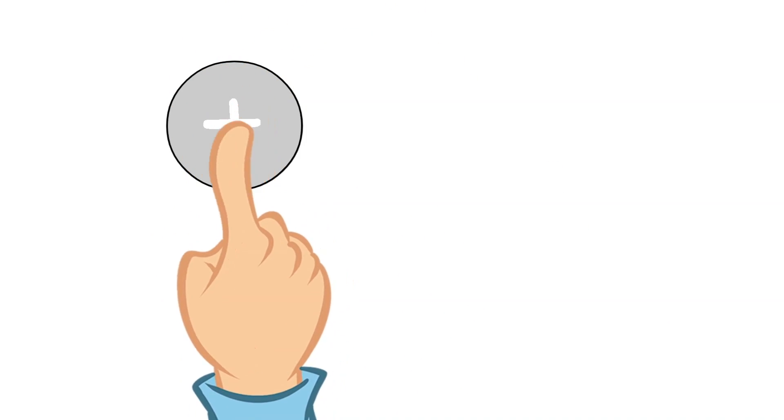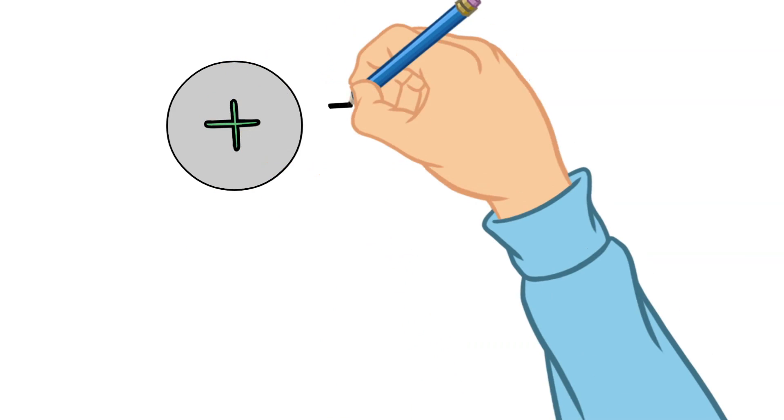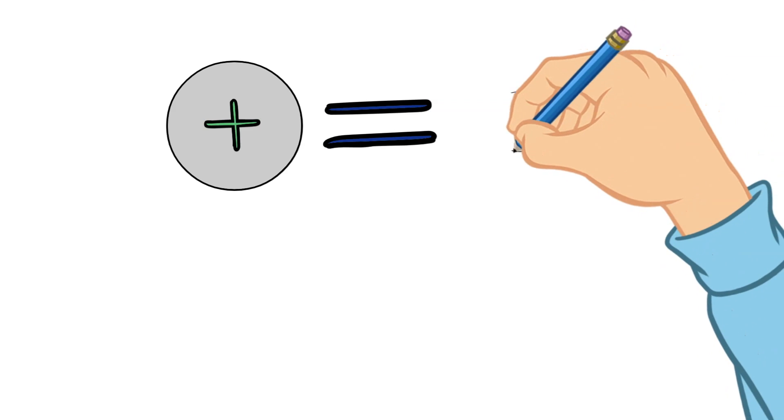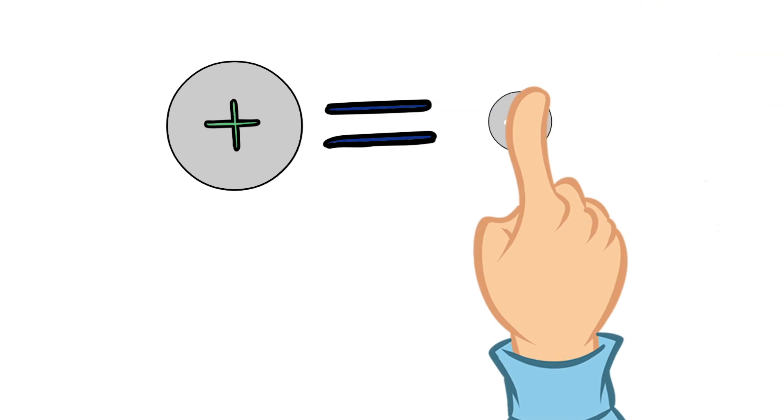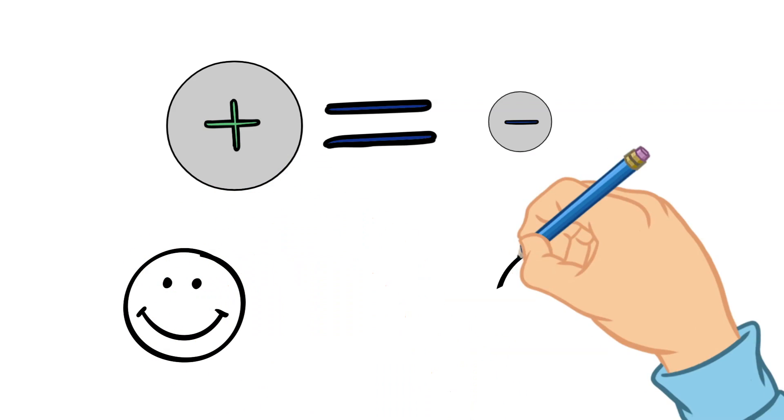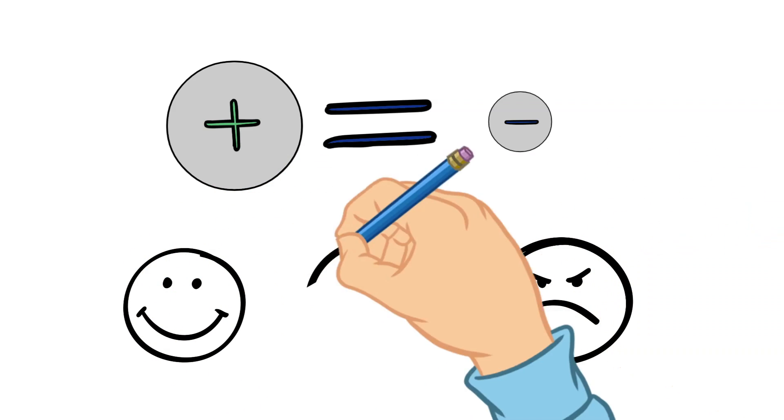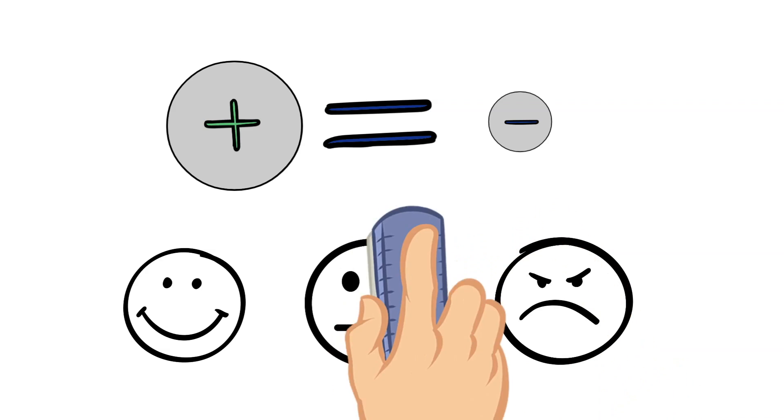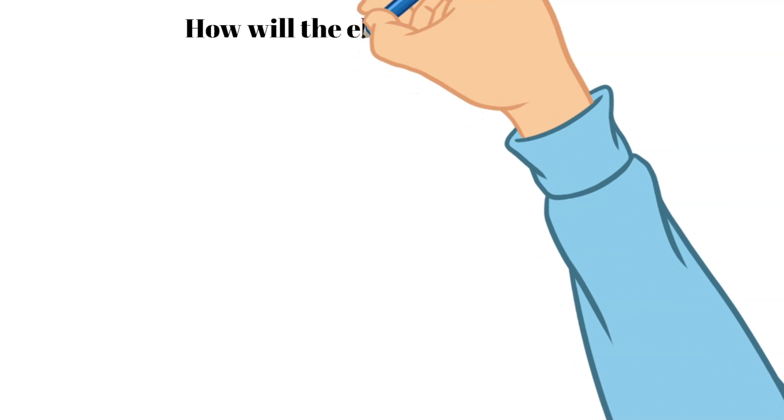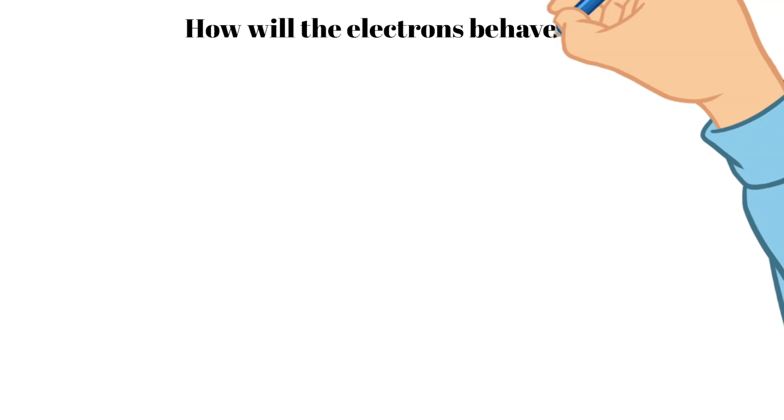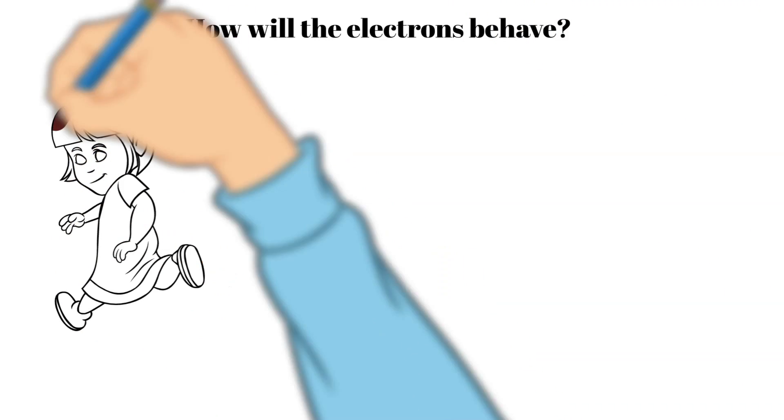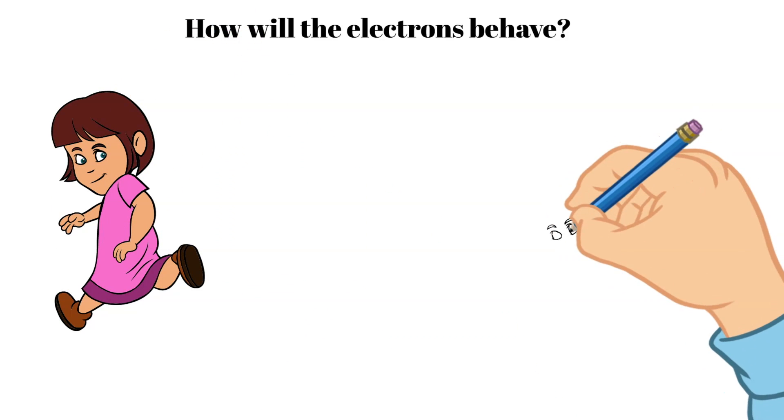This means that if there are the same amount of protons and electrons in an element, then this element is neutral - does not have a positive or a negative charge. It is important to note that the charge of an element impacts how stable this atom is and how it behaves. Due to this, because we will be diving into this more in depth in the following weeks, this video was an introduction to all of this and purely teaches you about the atomic number.